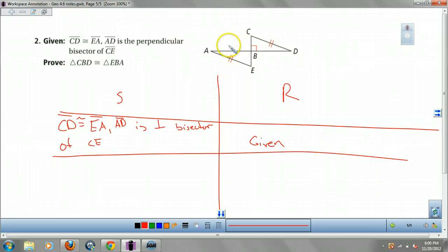All right, what do we know? Well, what's it mean to be a perpendicular bisector? Well, it means that, what do we know about angle CBD, and angle ABE?